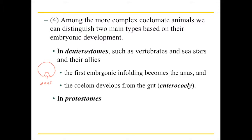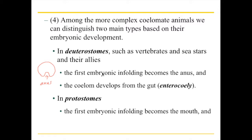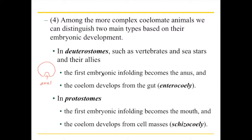The other group is called the protostomes, and their characteristics are opposite. In protostomes, which is everybody else, the first embryonic infolding becomes the mouth. The coelom develops from a variety of cells floating around in the middle of the body — rather than coming from the inside, it comes from different cell masses in multiple places. That's called schizocoely. The term schizo is related to schizophrenia — multiple personalities — so here multiple cell masses form the coelom from multiple different places.